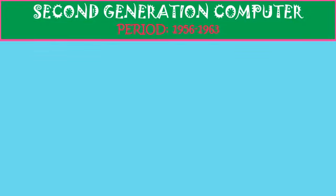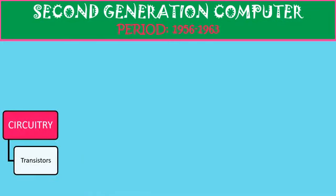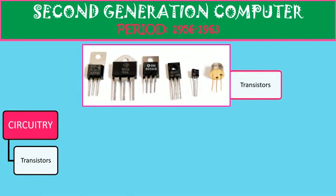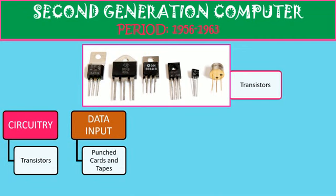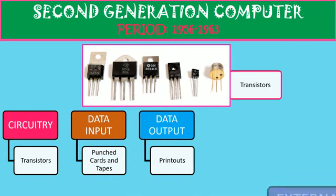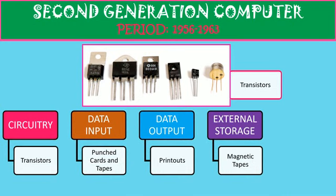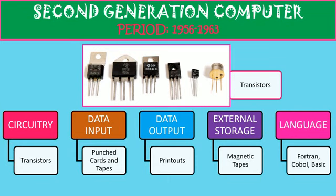Now we come to the second generation computers. The time period for this generation is 1956 to 1963. The circuitry used in second generation computers was transistors. You can see the picture of transistors here, and you can compare them with vacuum tubes — vacuum tubes were big in size and transistors are small in size. The data input was again given with the same punch cards and tapes. Data output was again printouts. External storage was magnetic tapes again. The language used was FORTRAN, COBOL, and BASIC.